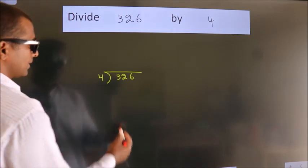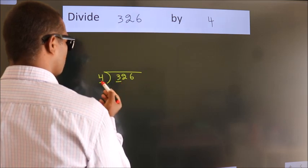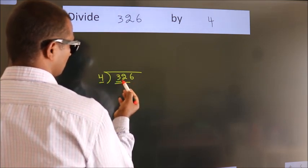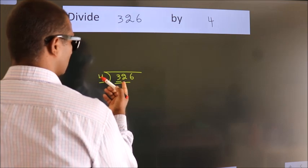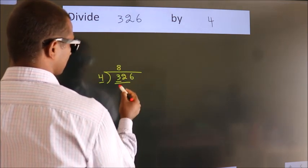Next. Here we have 3, here 4. 3 smaller than 4. So we should take two numbers, 32. When do we get 32? In 4 table, 4 8s, 32.